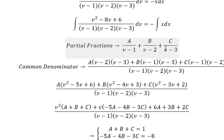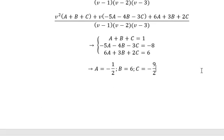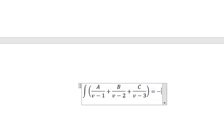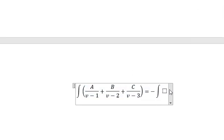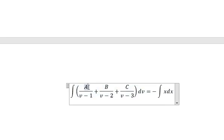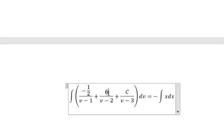So we put everything in here. So we have A is about negative one over two, B is about number six, and C is about negative nine over two.